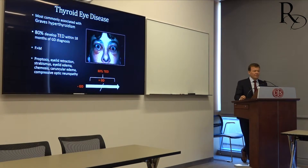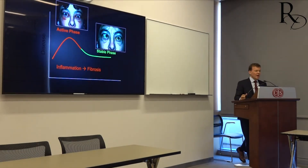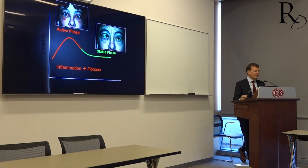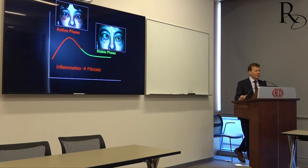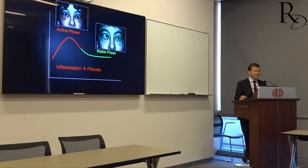I use the analogy that thyroid eye disease is kind of like a hurricane. It comes through in this active progressive phase where you get all this inflammation, and then the inflammation stops — the hurricane passes — but you're still left with the devastation. Even though the disease goes into remission, the damage remains: the fibrosis, the bulging, the eyelid retraction, the double vision. Chances of recurrence are less than four percent, but it can happen.